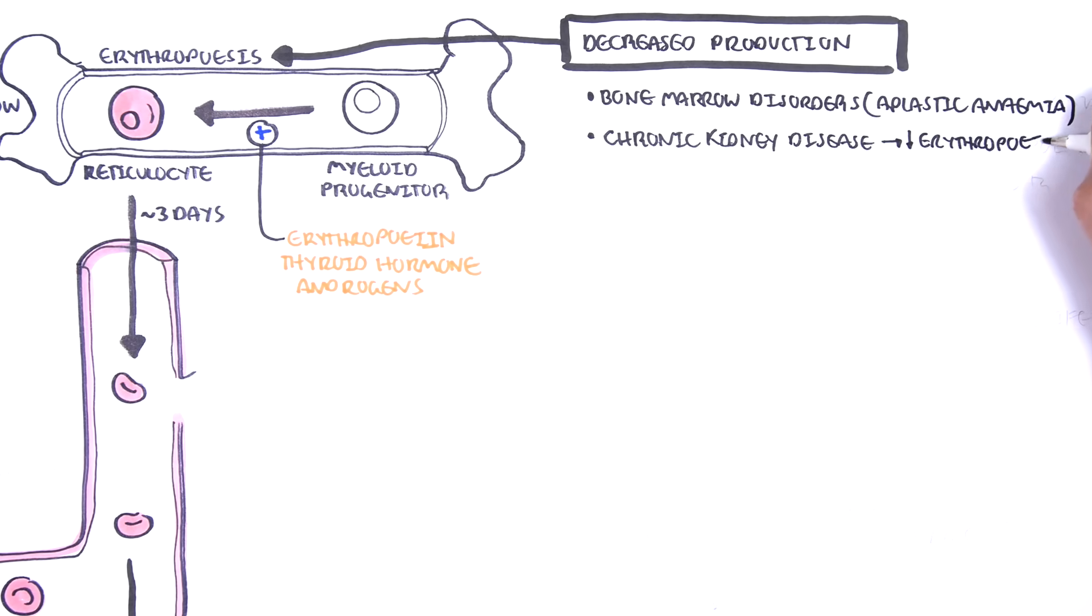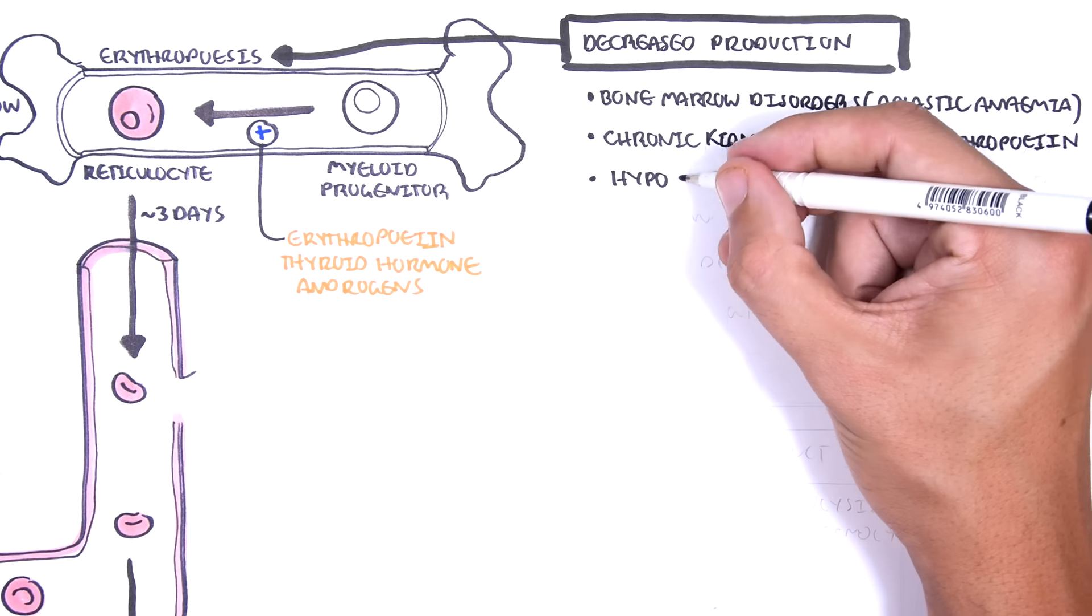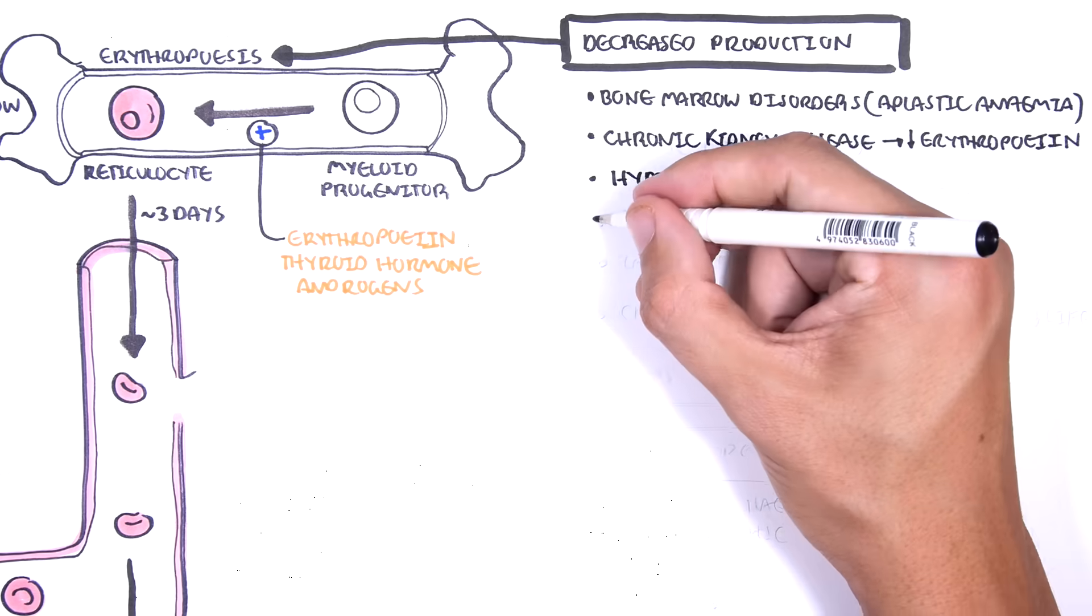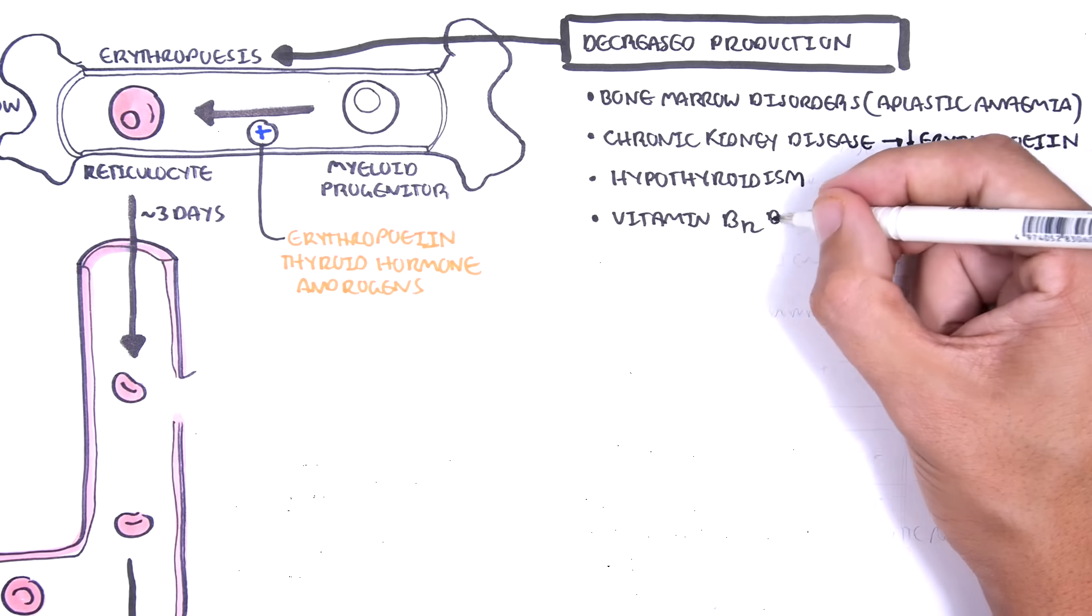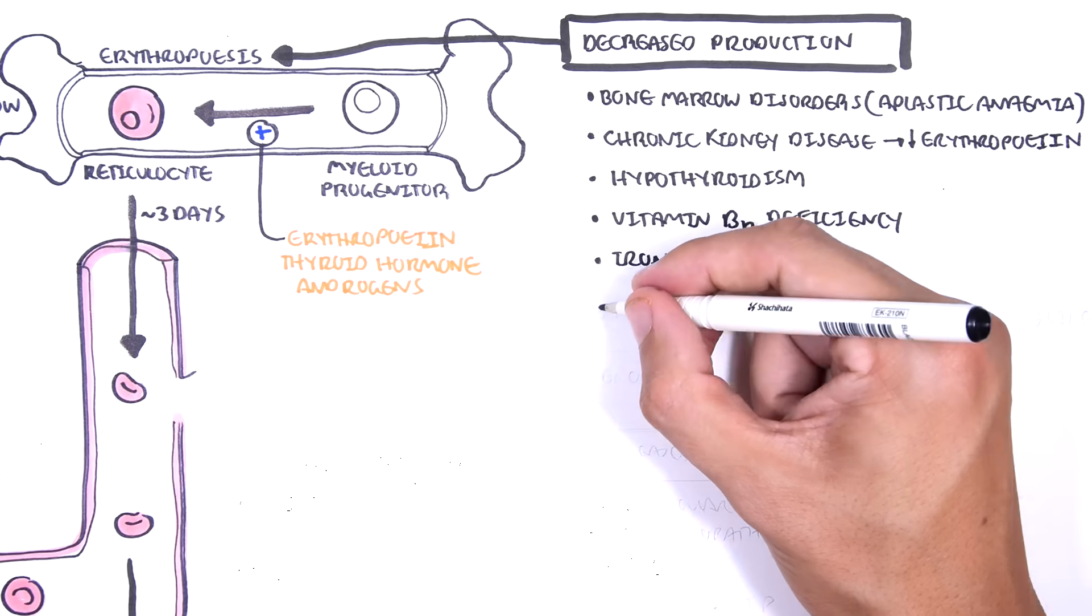Chronic kidney disease can also cause anemia, because when you have chronic kidney disease or kidney failure, you're reducing erythropoietin production and therefore reducing erythropoiesis. Hypothyroidism, because remember thyroid hormones play a role in stimulating erythropoiesis.